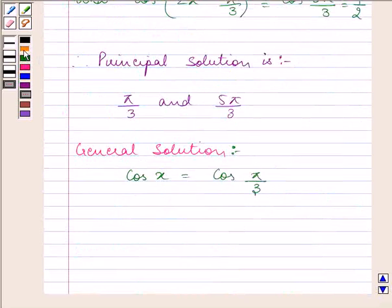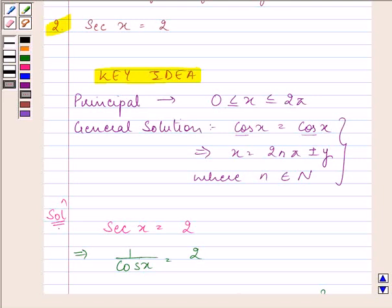So that means x will equal 2nπ plus or minus π by 3, as y equals π by 3. We have just substituted the value of y in the above-mentioned theorem, which will help us in finding the general solution.